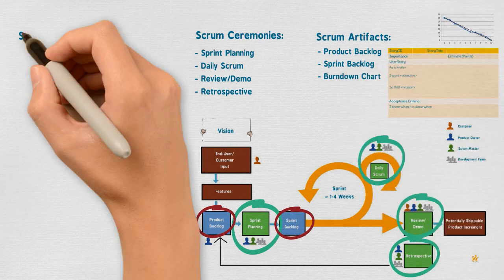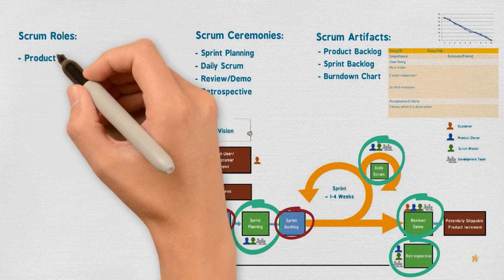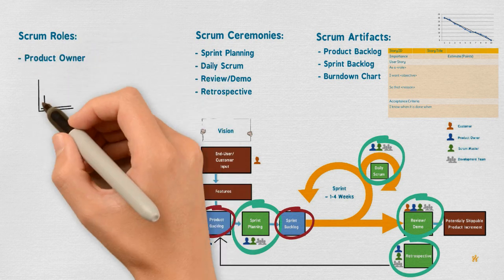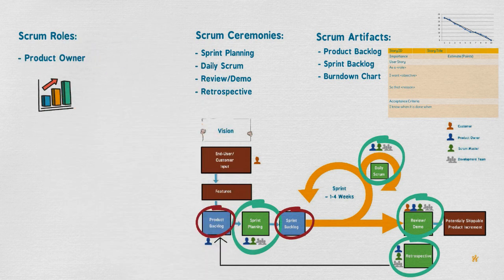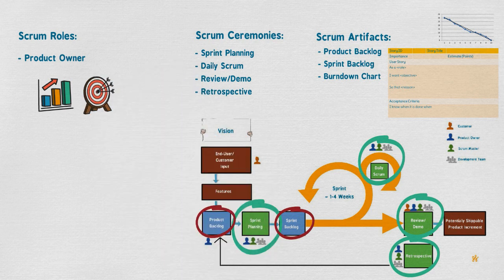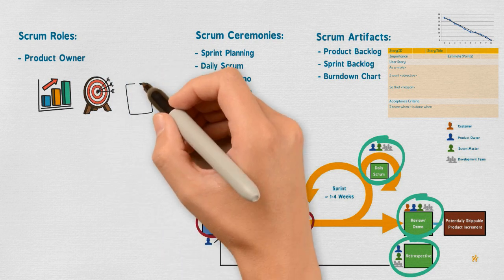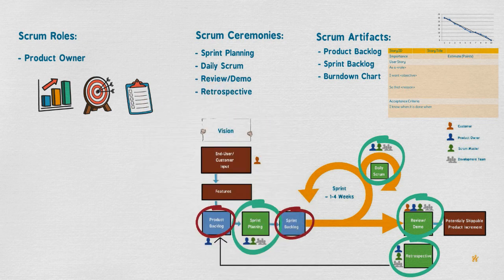The Scrum team is self-organized. Its roles are: Product Owner, who is responsible for maximizing the product value, setting product goals, and agreeing on sprint goals, as well as ensuring the product backlog is clearly expressed, ordered, updated, and refined.